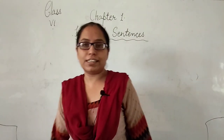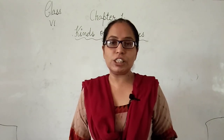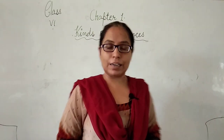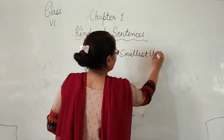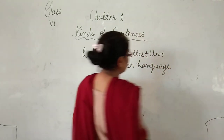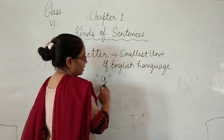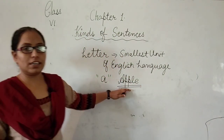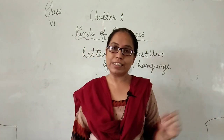Before starting the chapter, let's take a quick revision of what is a sentence. In English grammar, a group of words which make a complete sense and a meaningful thought is called a sentence. In English, the letter is the very smallest unit of the English language. When I make a group of letters — apple — this is a word. So a group of letters make a word.